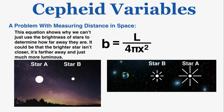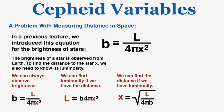Before 1908, scientists did not know the luminosity of stars farther away than 100 light-years. Since we can always observe brightness on Earth, if we have the luminosity of a star we can calculate its distance, and if we have the distance we can calculate its luminosity — but we need one in order to calculate the other. Before Cepheid variables, we had no way of knowing the luminosity of stars farther away than 100 light-years, so we couldn't use the brightness equation to calculate distance.